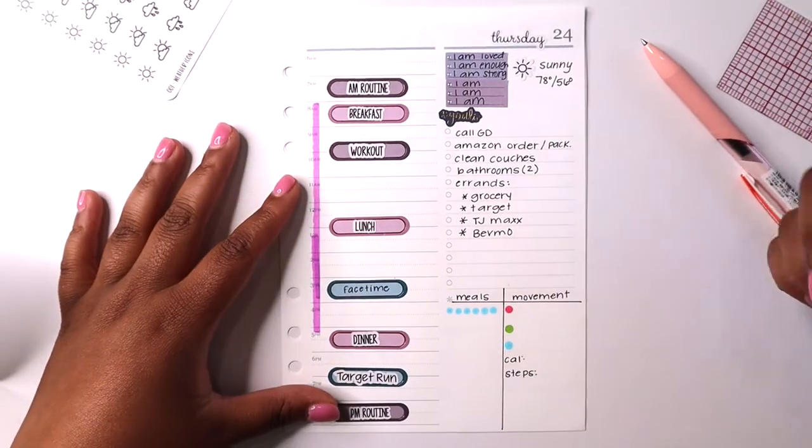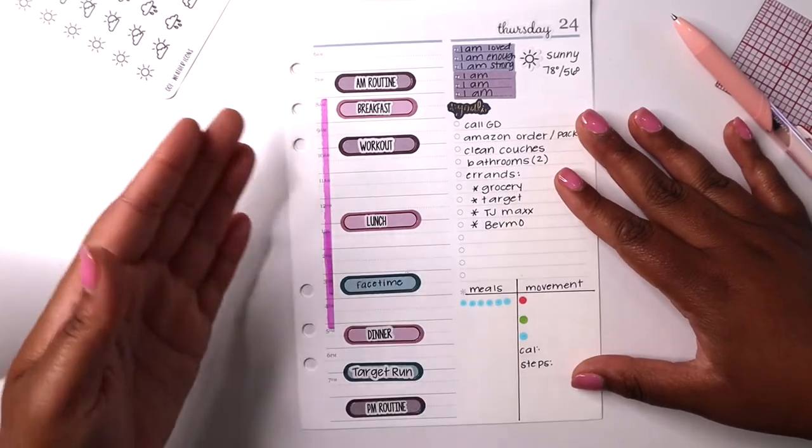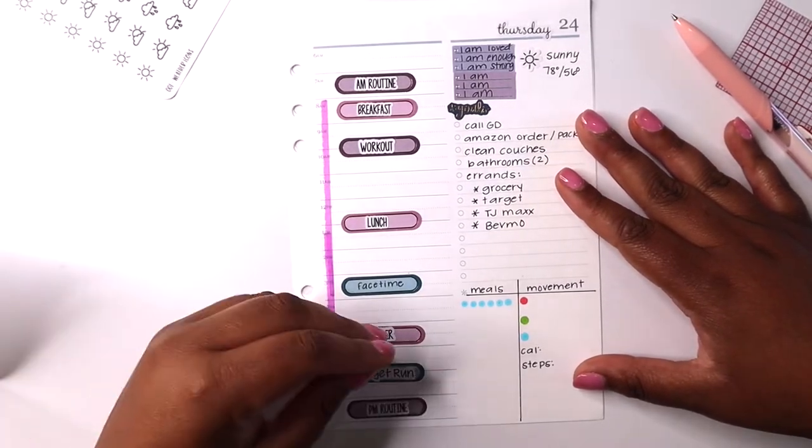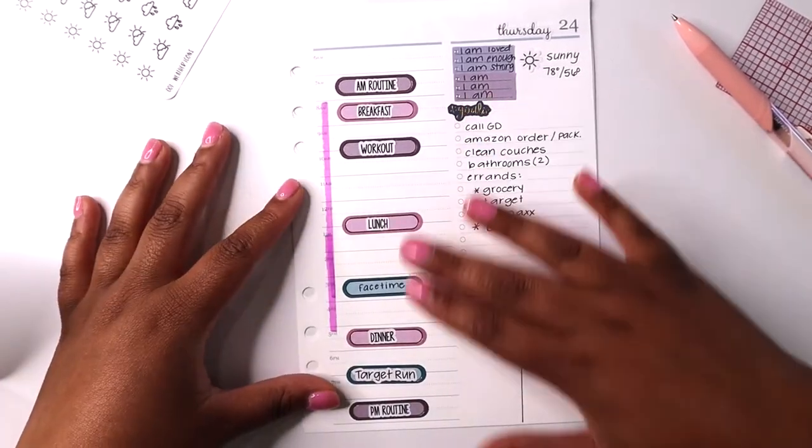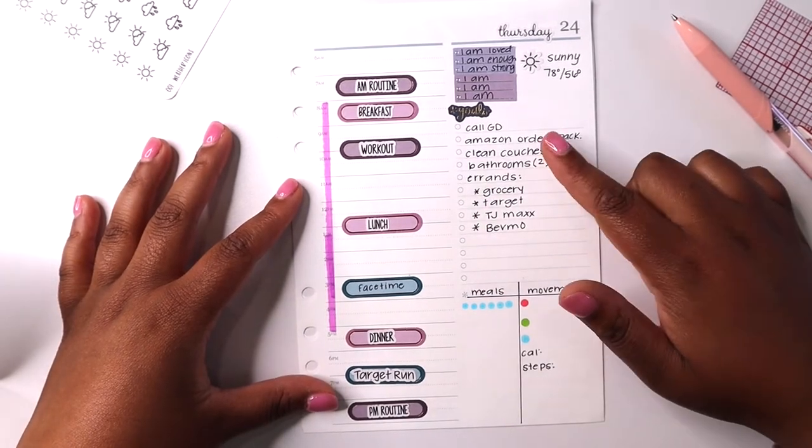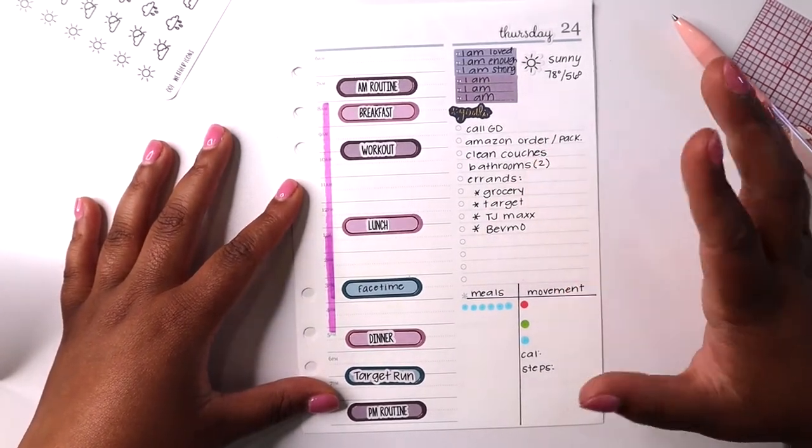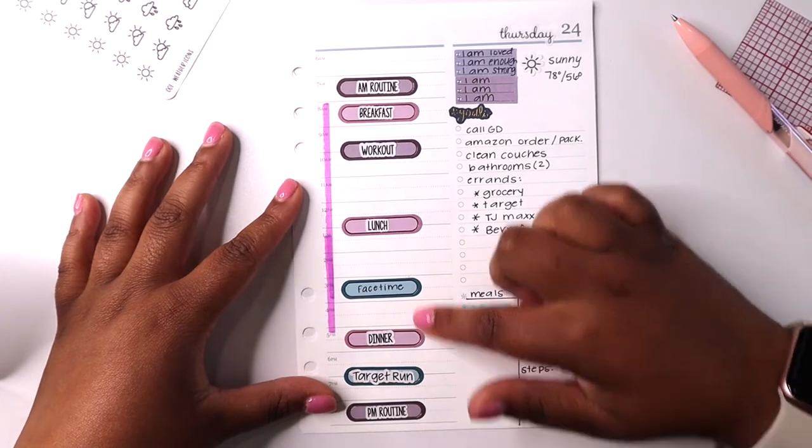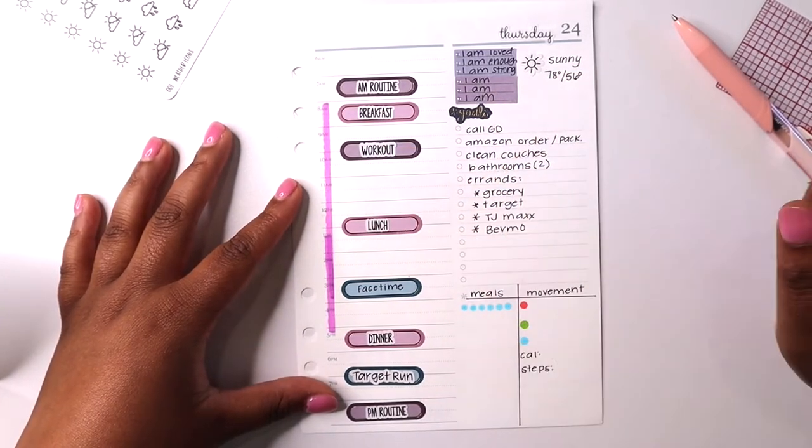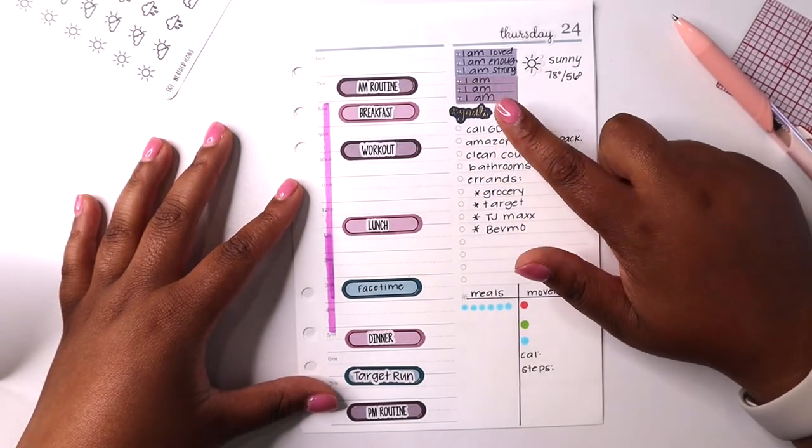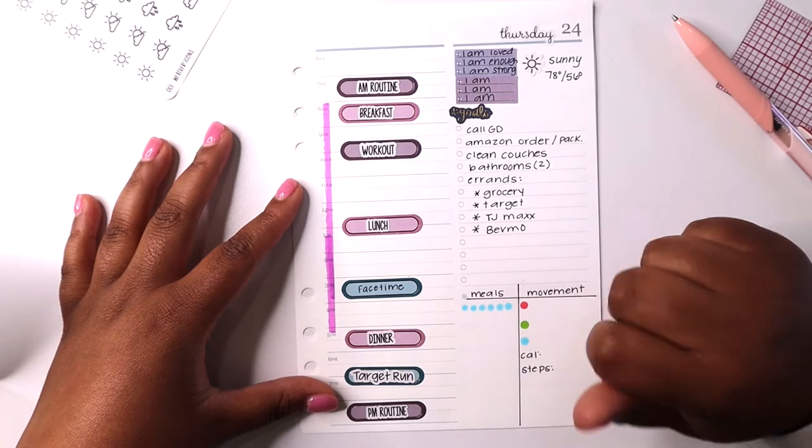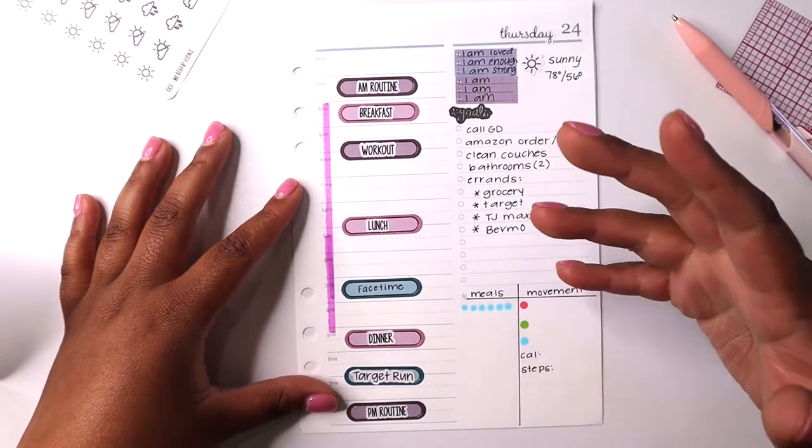Okay everyone, that is it for today. It's a very quick plan with me because I don't have that many events going on and everything I want to do is not really tied to a specific time. So I've put most of the things over here and just color coded different tasks on this side. I also really like how my affirmations look at the top so I might keep that around for a little bit.